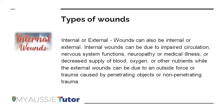Internal wounds are those happening inside the body, due to impaired circulation, nervous system function loss, neuropathy, medical illness, or decreased supply of blood, oxygen, or other nutrients internally. External wounds are those visible on the outside, caused by an outside force or trauma — either penetrating or non-penetrating.